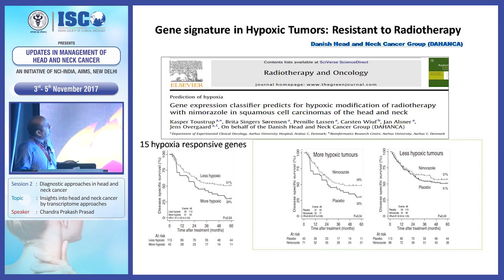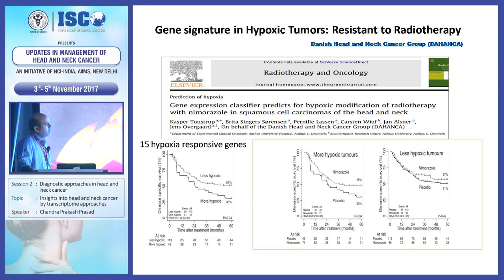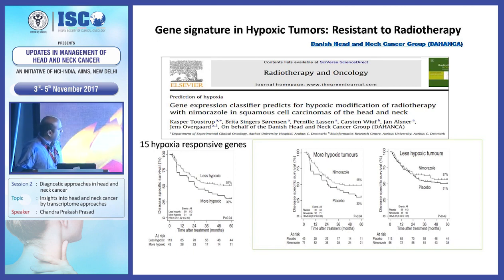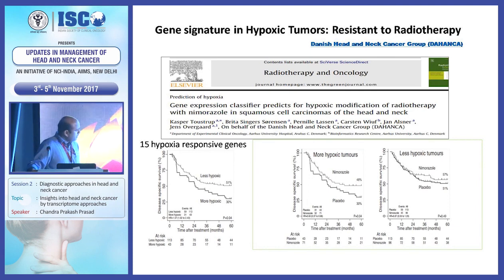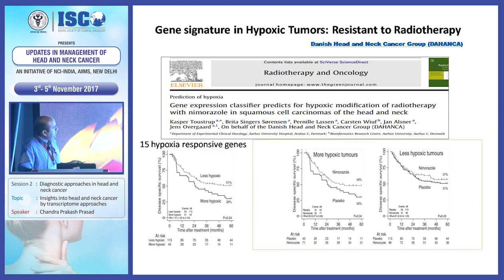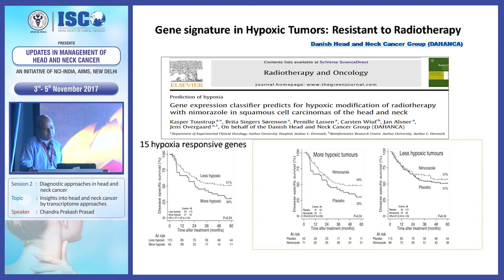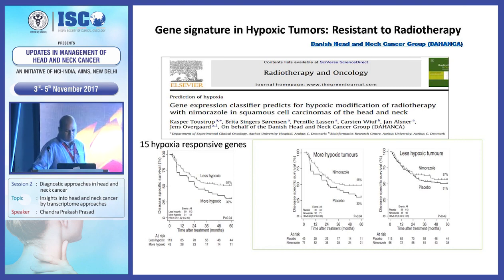We know that hypoxia is a very important factor in cancer progression, and hypoxic cells are resistant to radiotherapy. A study published by the Danish Head and Neck Cancer Group identified 15 hypoxia response genes and segregated head and neck cancer into more hypoxic and less hypoxic groups based on this hypoxic response gene signature. They showed that in more hypoxic tumors, where these hypoxic response genes are present, when a radio-sensitizing agent was given, patients had better disease-specific survival compared to less hypoxic tumors.